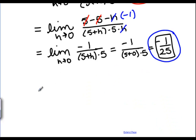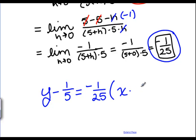So playing that into my point slope form of my line, I get y minus my y value, which is 1 fifth, equals my slope, negative 1 over 25, times x minus my x value, which is 5.